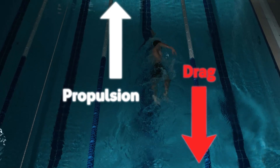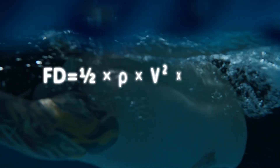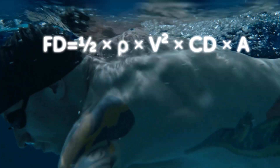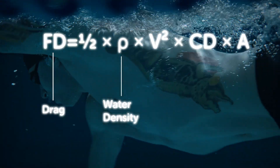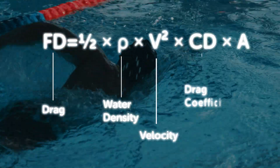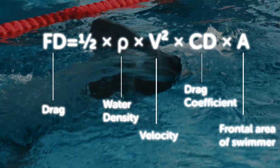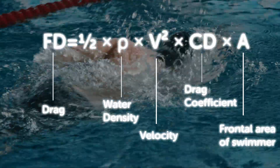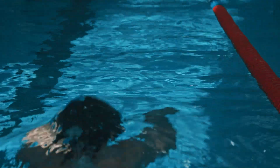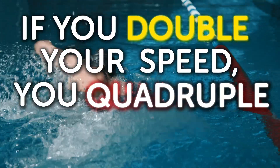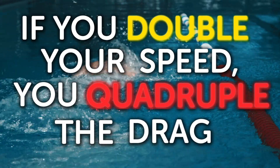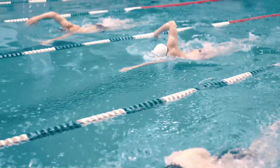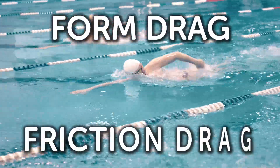In scientific terms, drag increases with the square of your velocity. The drag force on a swimmer can be expressed in this formula, where FD is the drag force, Rho is the density of water, V is the velocity of the swimmer, CD is the drag coefficient which depends on the swimmer's shape and technique, and A is the frontal area of the swimmer. In normal people terms, that means if you double your speed, you quadruple the drag. When a swimmer moves through water, they encounter two main types of resistance: form drag and friction drag.